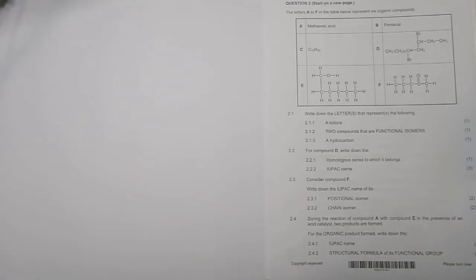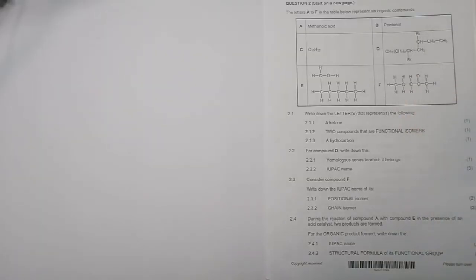They say the letters A to F in the table below represent six organic compounds. We've got methanoic acid, pentanal, and what looks like butane — C10H22, which is definitely an alkane. And we've got that larger structure there. We've got E, which looks like an alcohol, and F, which is a ketone.